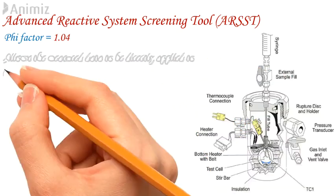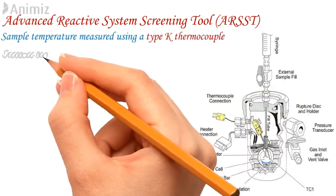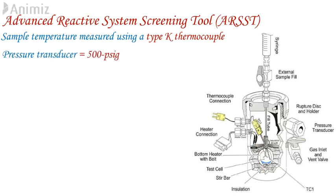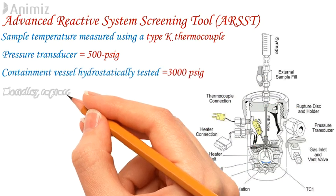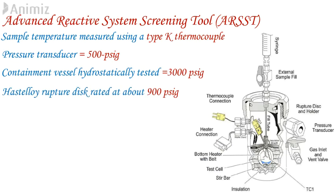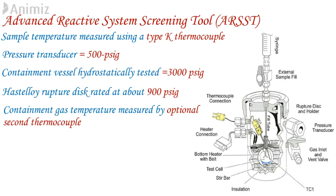This key feature allows the measured data to be directly applied to process scale. Sample temperature is measured using a type-K thermocouple, and a 500 PSIG pressure transducer is standard. The containment vessel is hydrostatically tested to 3000 PSIG and has a rupture disc rated at about 900 PSIG. The containment gas temperature can be measured during a test using an optional second thermocouple. The control box contains a temperature and pressure amplifier and a heater power supply. A single heater circuit powers the 24-ohm bottom heater, delivering up to 17 watts.